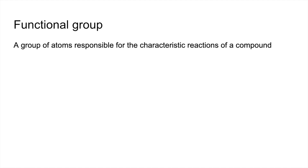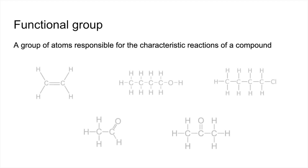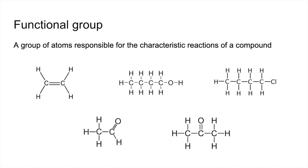Functional group next — that's the group of atoms in the molecule responsible for the characteristic reactions of a compound. Each of these compounds here contains a different functional group. Moving across the screen, we've got the carbon-carbon double bond — that's an alkene. We've got the OH group — that's an alcohol. We've got the halogen, so in that case it's a chlorine — that's called a halogeno-alkane.